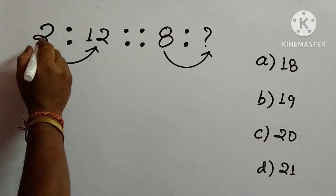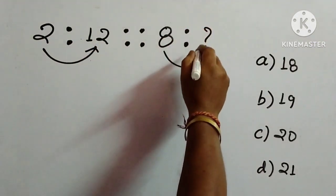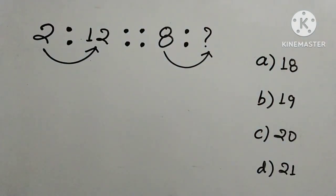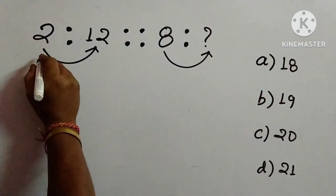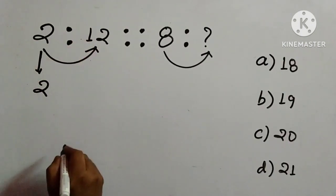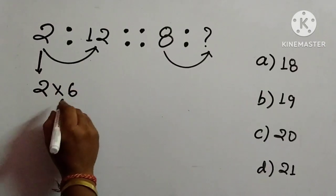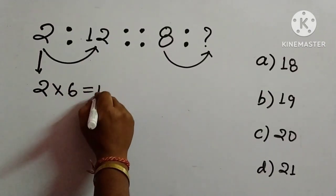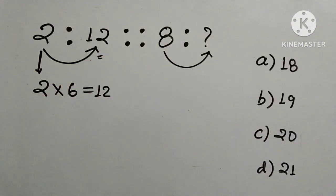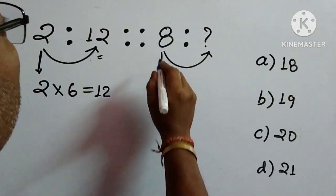The question says: 2 is to 12 is equal to 8 is to what? We have to find out the appropriate number; four options are given. We will consider 2 and work out how we can get 12. Very simply, we multiply by 6: 2 into 6 is 12, which is given. So we will check whether the same process is followed on the other side.